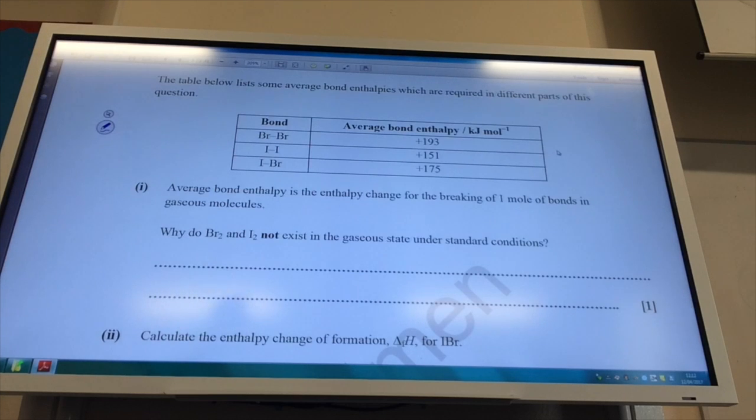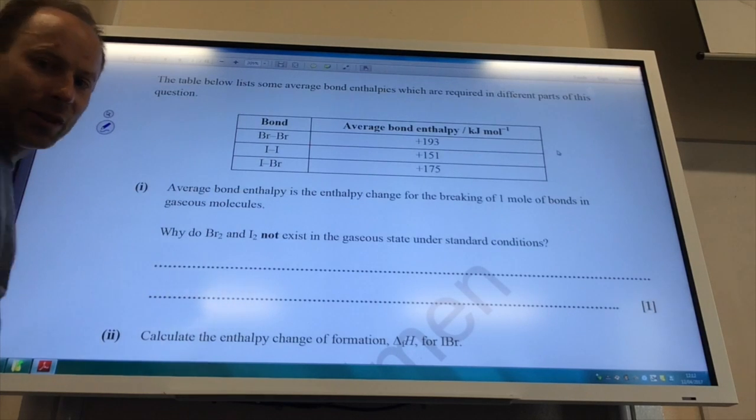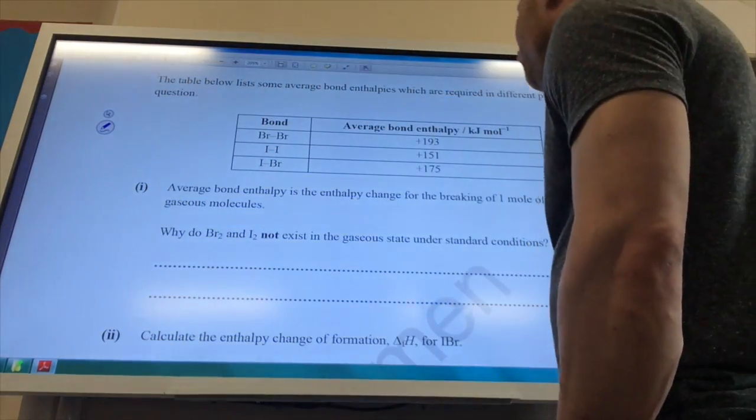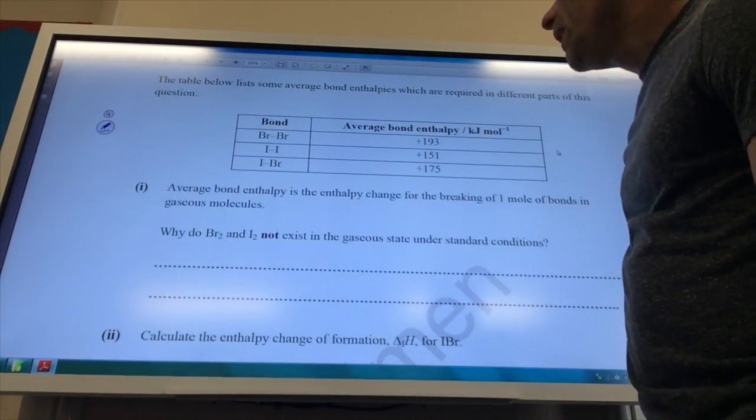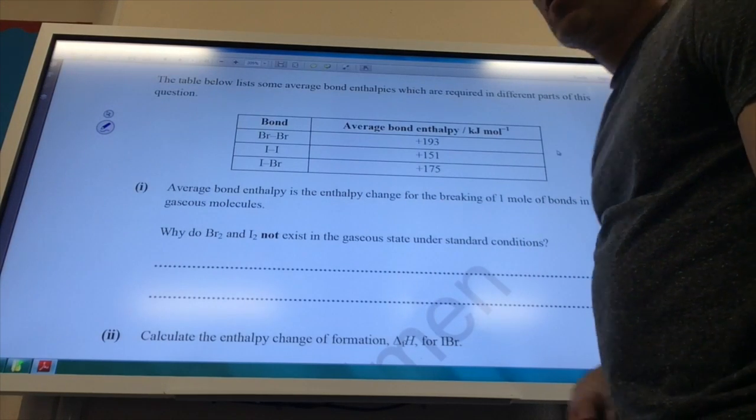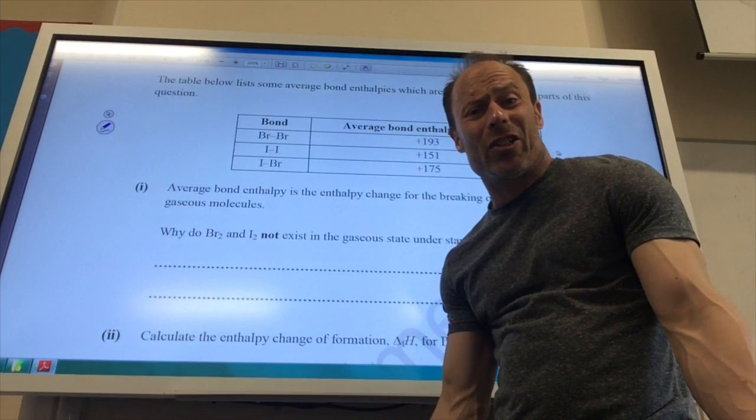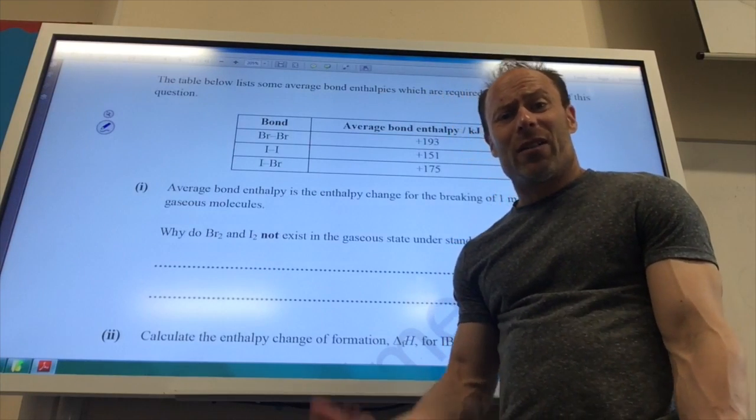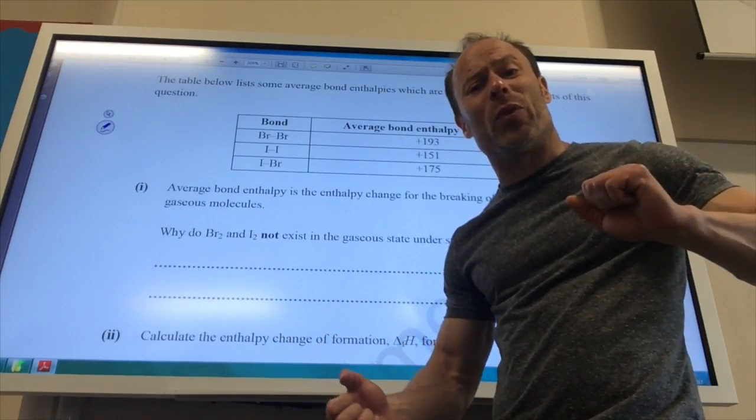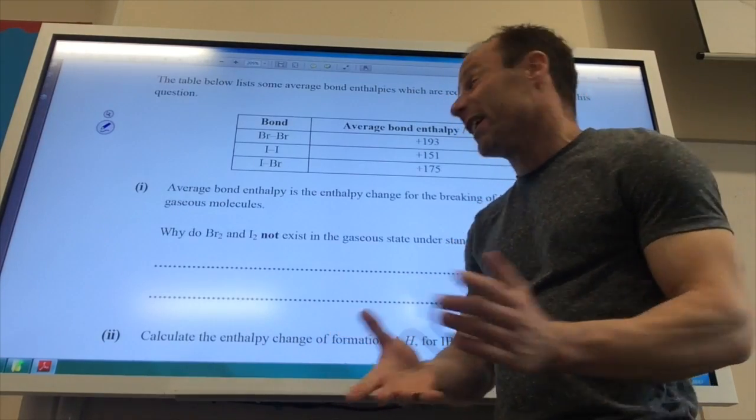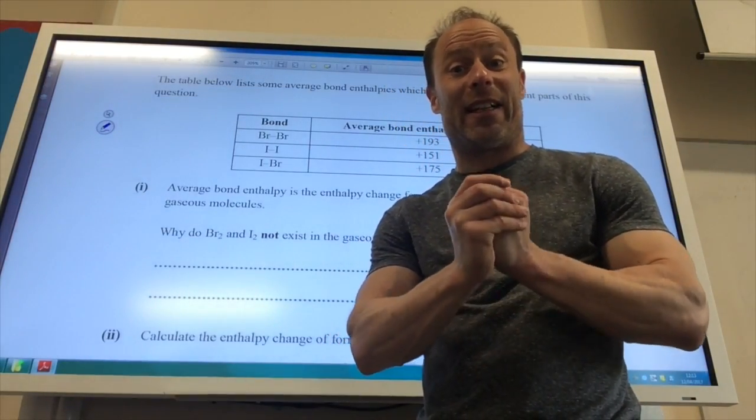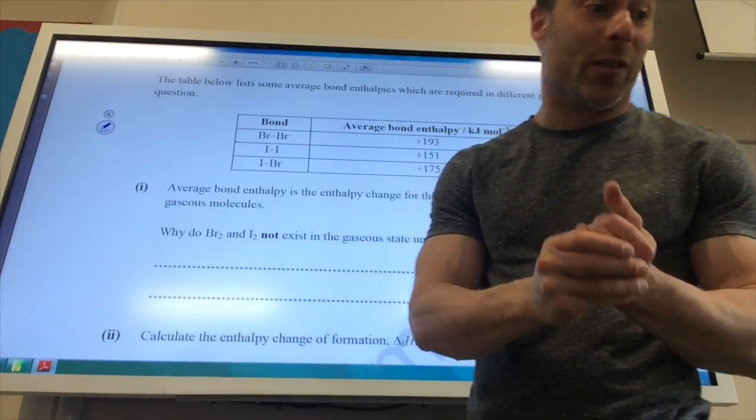So giving me some average bond enthalpies now. So it looks like we're heading into some enthalpies. They've given me the definition, rather lovely. Why do bromine and iodine not exist in the gas state under standard conditions? Well, what are standard conditions? Standard conditions is going to be room temperature. So at room temperature, there isn't enough energy to break the London forces between the molecules, effectively. So for bromine and iodine, at room temperature, there isn't enough energy to break the London forces between the molecules.